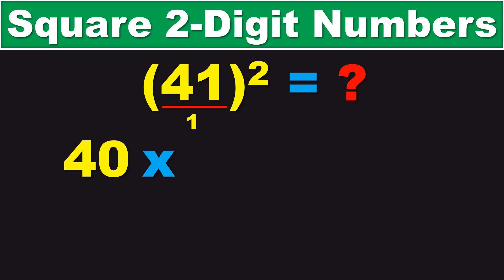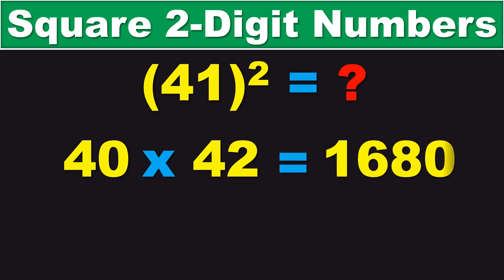So, in this case, you have 41 plus 1, which is 42. The next thing we have to do is multiply these two numbers together, 40 and 42. And, doing the math, the answer to that is 1680.